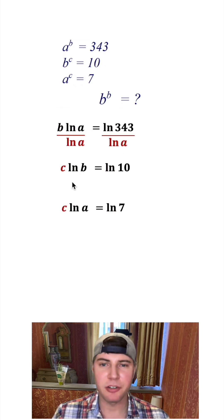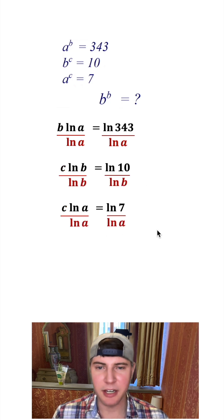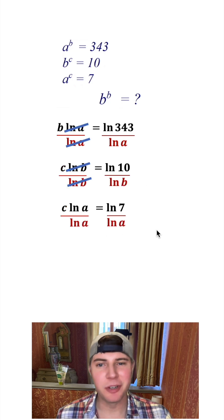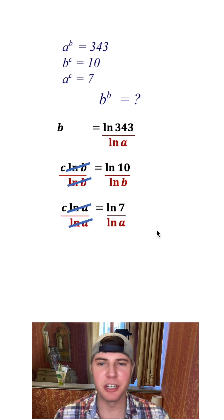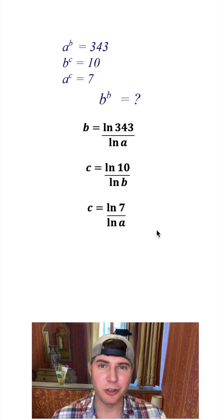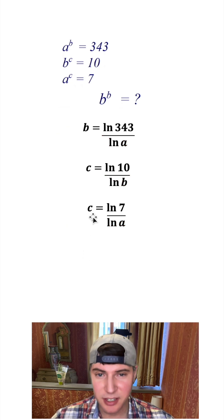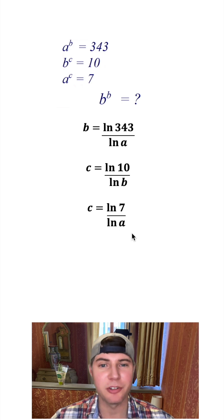And next, I want to divide both sides by natural log of a, natural log of b, and natural log of a. These will cancel, these will cancel, and these will cancel, leaving us with just b and c, and we can scoot them over. We now know that c is equal to the natural log of 7 over natural log of a. So I'm going to substitute that in for this c right here. And now we don't need this anymore.